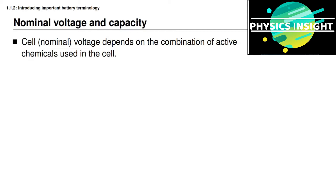The voltage of a battery depends on the combination of active chemicals or active materials used inside the cells. The voltage of a battery cell changes depending on whether it's fully charged, completely discharged, or somewhere in between. We need some kind of voltage label when we market and sell a cell, so we define something called a nominal voltage — a typical or average voltage somewhere between the fully charged and fully discharged voltage of a cell.